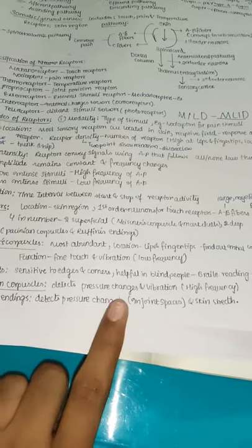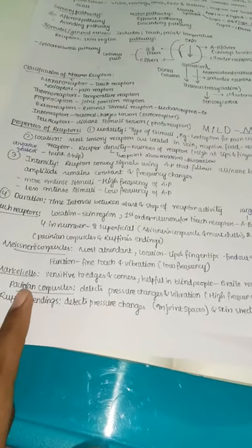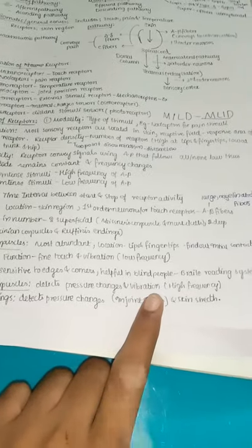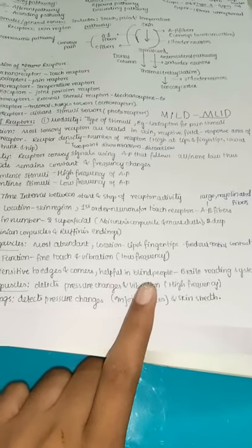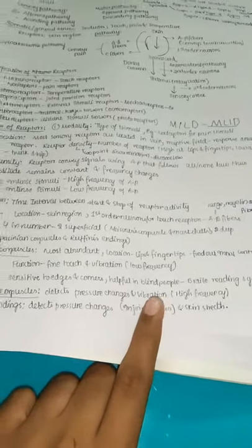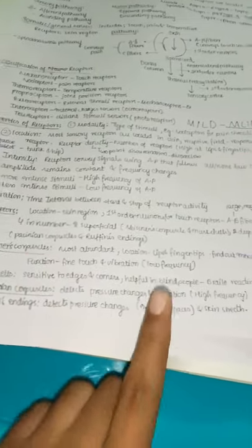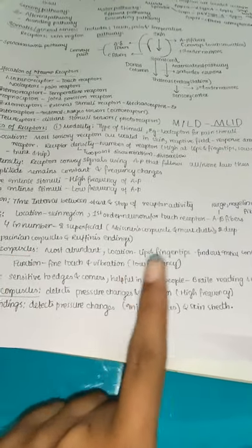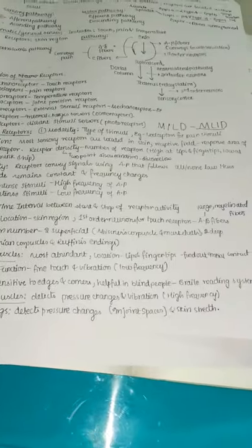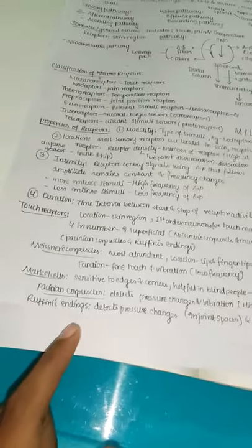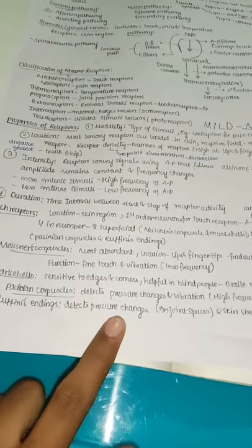Pacinian corpuscles detect pressure changes (P for pressure) and detect vibrations of especially high frequency. Meissner's corpuscles detect low-frequency vibrations, while Pacinian corpuscles detect high-frequency vibrations.